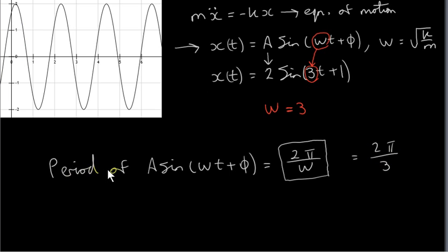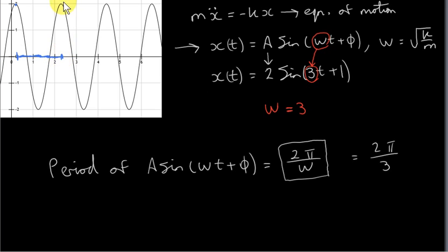The period is the time taken for one complete oscillation of the particle. Let's pick a point on the graph — say, this point here where the position is 2, the maximum displacement. The particle has reached its maximum height at some time. Following one complete oscillation, the time taken is this interval on the graph. The length of this interval is 2π over 3.